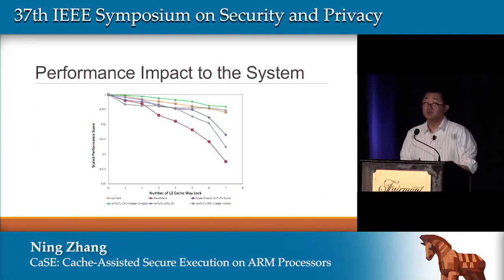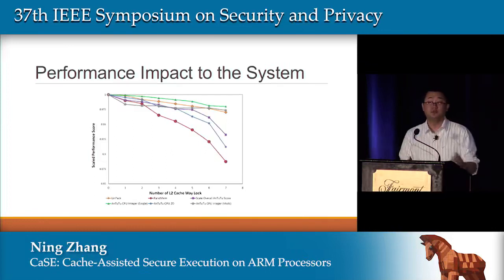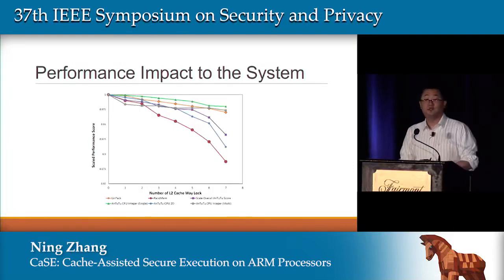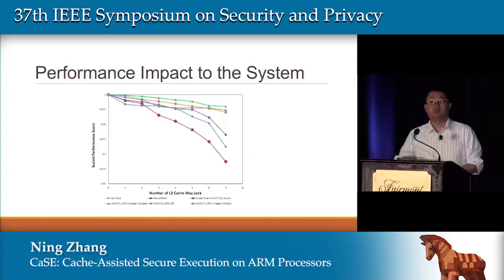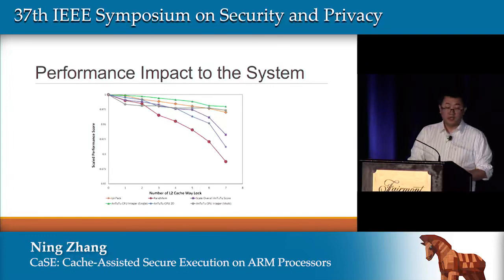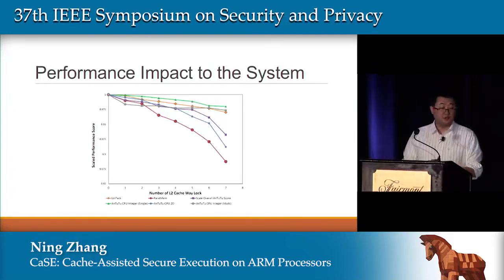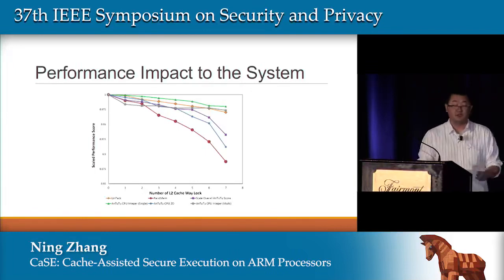As for the performance impact on the system itself: when we use only one L2 cache way, it's very small — about 3% overhead in the worst case with random memory reads across the entire memory region. When we use all seven cache ways, we see a slightly worse performance overhead, reaching 20–30%. But for the security we gain, I believe it's a reasonable price to pay.